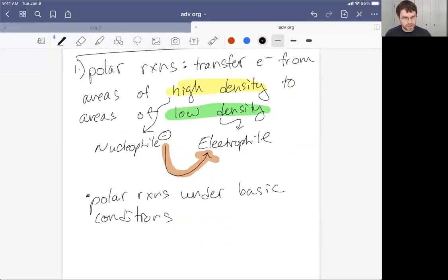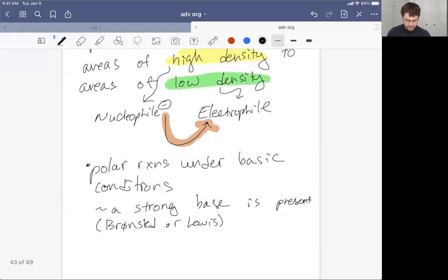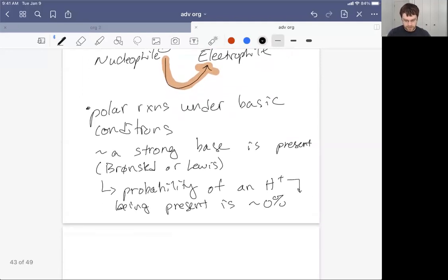Polar reactions under basic conditions—what we say is that a strong base is present, and that base could be a Bronsted base or a Lewis base. What I want you to keep in mind that's critical about characterizing a reaction as being under basic conditions, is that the probability of encountering an H plus, or the probability of an H plus being present, is approximately 0%.